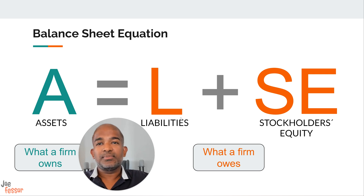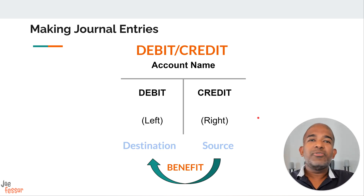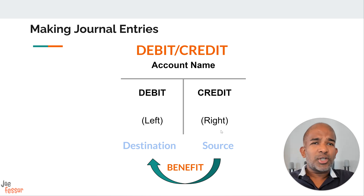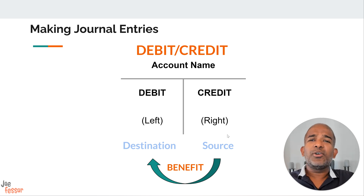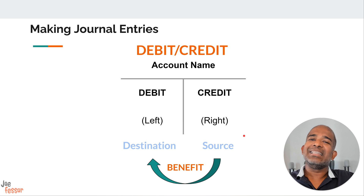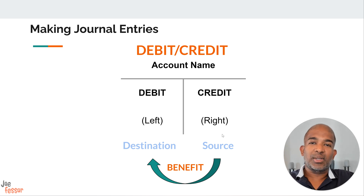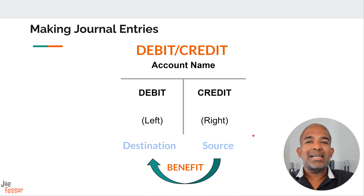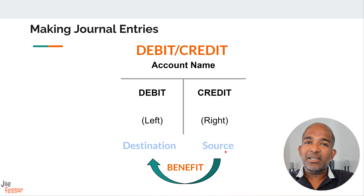Here's a visual representation of journal entries, often referred to as T-accounts. You'll see how we organize these entries with debits on the left side and credits on the right side. This simple structure allows us to easily track the flow of benefits within a company's financial transactions. As beginners, it's helpful to think of debits and credits in terms of the source and destination of a benefit. When a company sells a product, the source of the benefit is the sale itself, which we credit. The destination of the benefit is the increase in cash or accounts receivable, which we debit. This approach allows us to trace the flow of value through the company's accounts, and it's a crucial tool for accurate bookkeeping. By following the path of benefit, we ensure that every transaction is properly recorded and the books remain balanced.